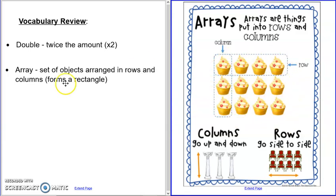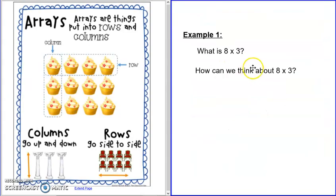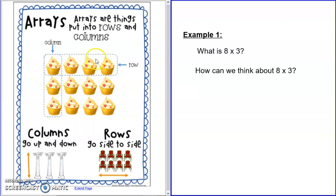Now that we have some background knowledge, let's get started. Our first example is eight times three. We're going to be figuring that out. First, I want you to close your eyes and visualize eight times three — what do you see? Now that you have a picture of what eight times three might look like: eight rows, three columns, we're going to get started on how we can solve that without having to skip count.